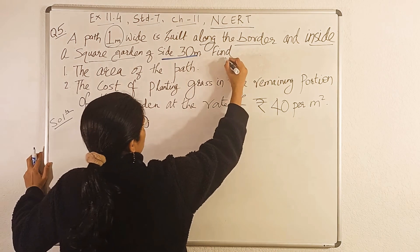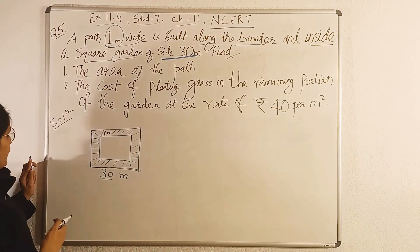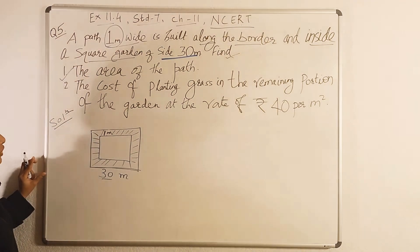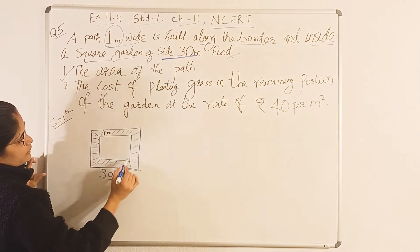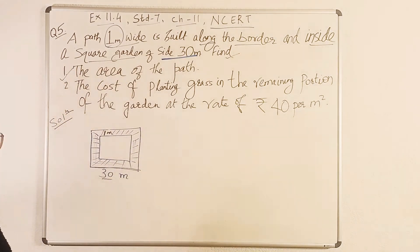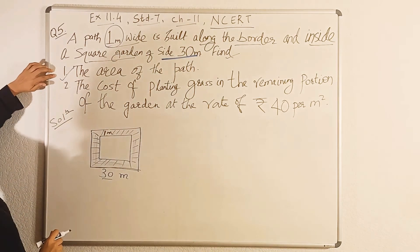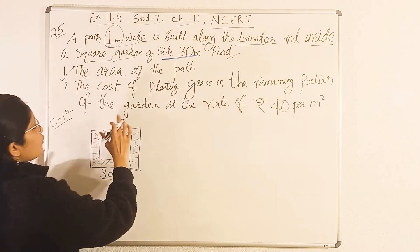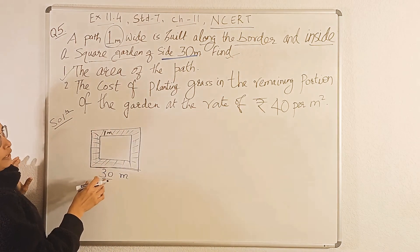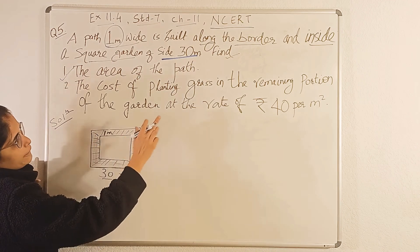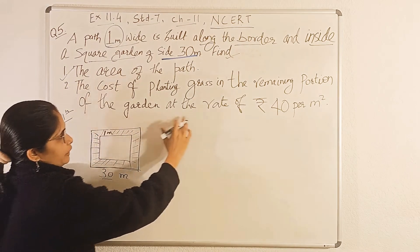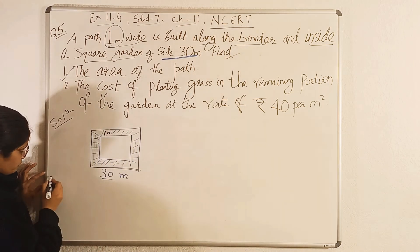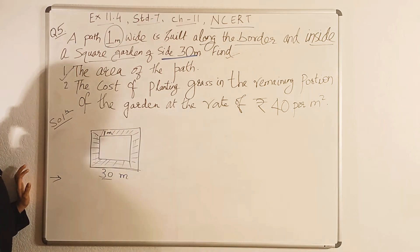Now, what we have to find out? First, find the area of the path. And second, the cost of planting grass in the remaining portion of the garden at the rate of rupees 40 per meter square. So this is our question. Now let us see the solution part.